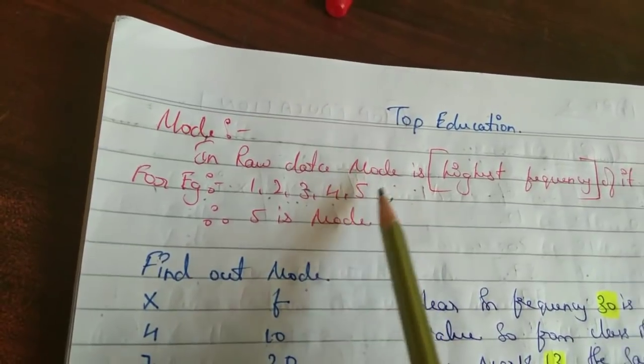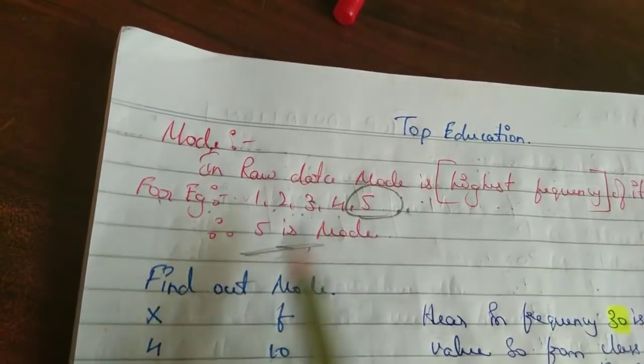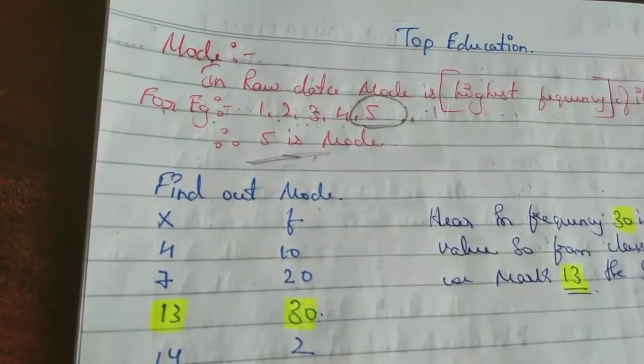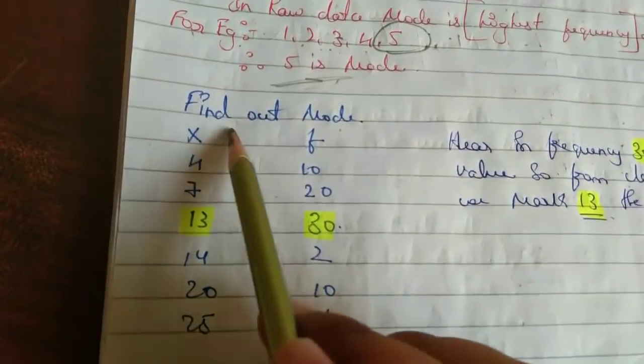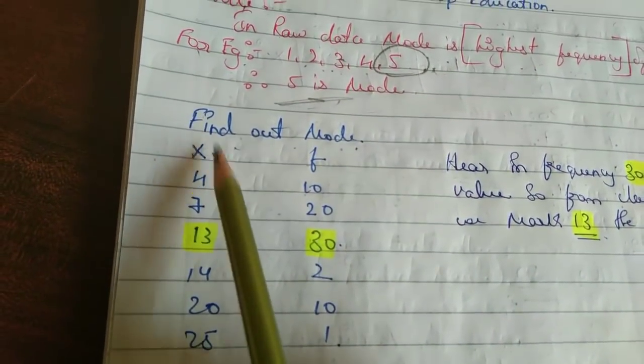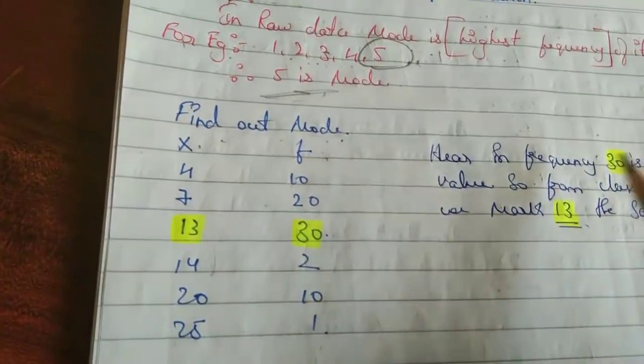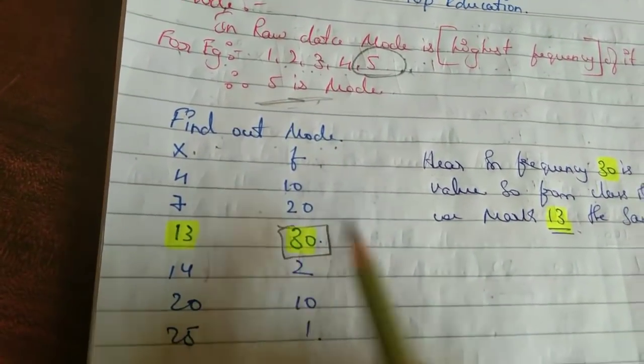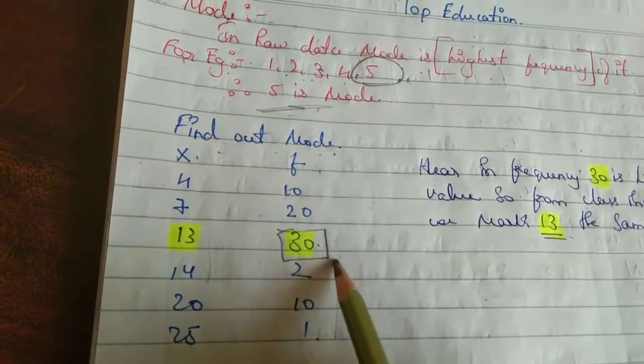For example, one, two, three, four, five. So here five will be... Let's move to the sum and see clearly. Find out mode. X is given below, frequency also is given. So here we have marked thirty because it is highest frequency.